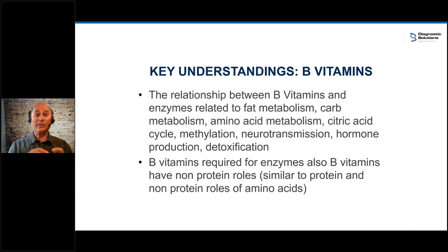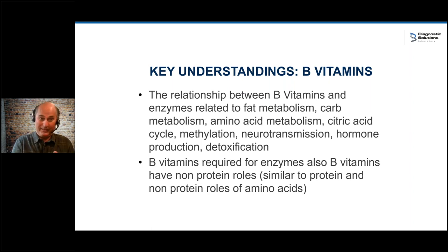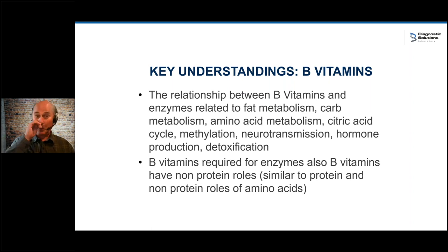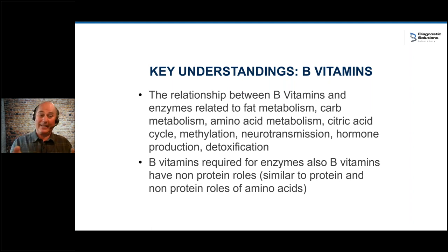You can look at the relationship between B vitamins and enzymes. Enzymes are made up of proteins — strings of amino acids. We take amino acids, string them together, and make proteins; that's what we call an enzyme. Then B vitamins are what make the enzyme work — for carbohydrate metabolism, the citric acid cycle, methylation, neurotransmission, hormone production. For all these different reasons, you need enzymes and B vitamins working together, and the enzymes require amino acids to be built.